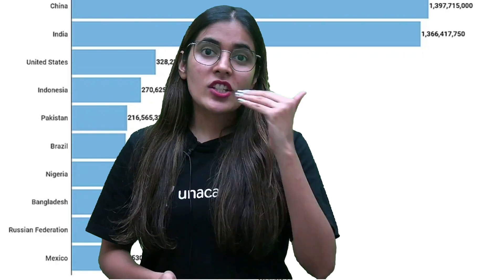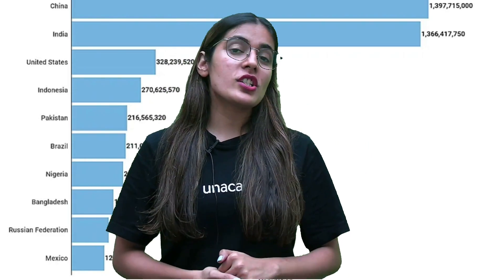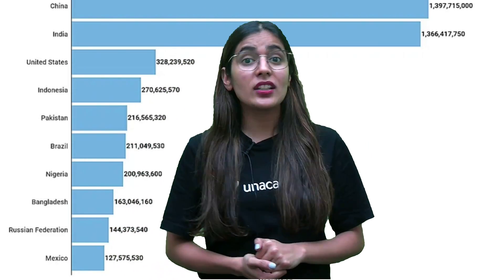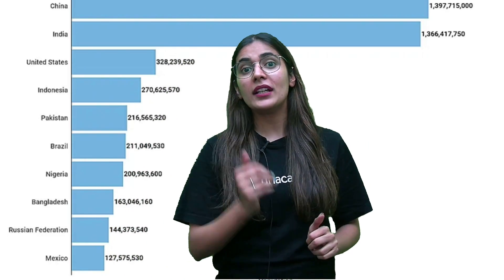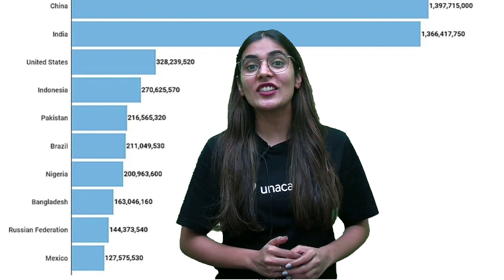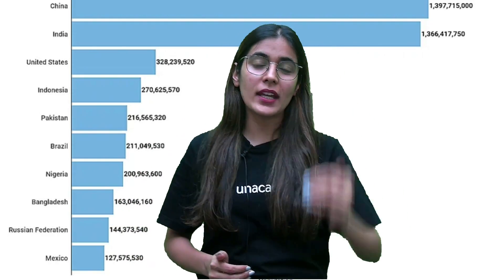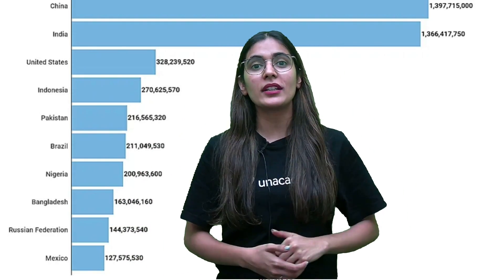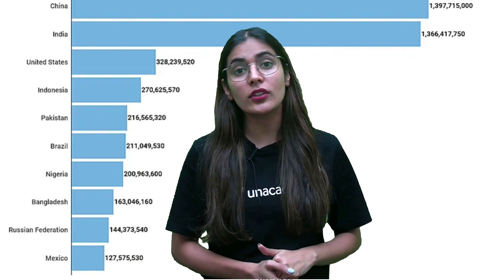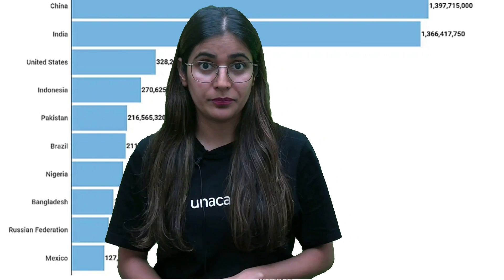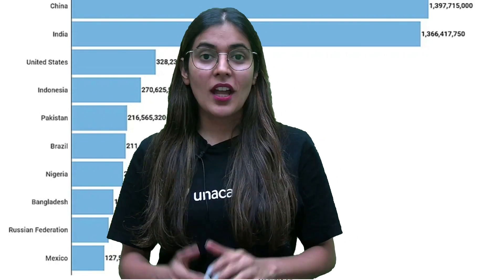China, India and US. China کا population جہاں 139 crore ہے، وہاں پہ India is 133 crore، اور اس کے بعد 3rd position پہ population اکدم drastically dip لیتا ہے to 33 crore only. So اس کا مطلب we are very densely populated in India.